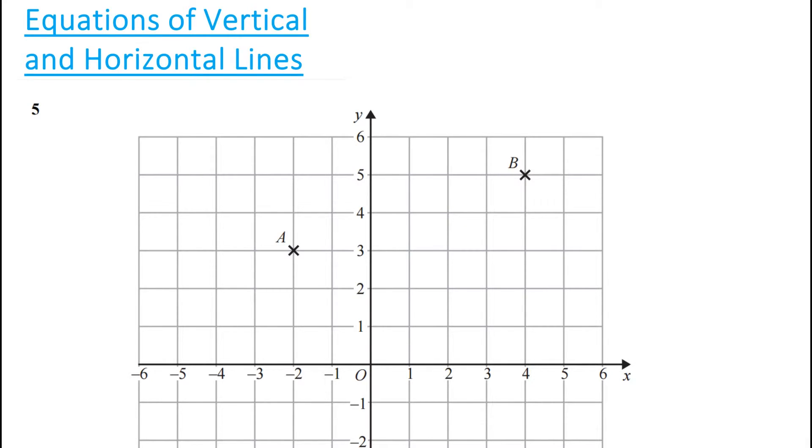If I draw a line down like this, what equation would you say that line has? You can clearly see it's going through the number 2 on the x-axis. So the equation of this line would actually be x equals 2.